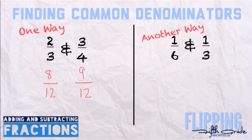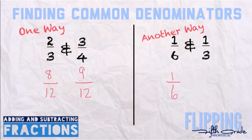That way is the easiest way, but it isn't always the best way. For the next problem, we have 1 sixth and 1 third. Look at the smaller number — does 3 go into 6? Yes it does. So we keep 1 sixth the same. To get the 3 to become a 6, we multiply by 2. So we must also multiply the 1 by 2, and we get 2 sixths. This way, in the end you won't have to simplify as much.